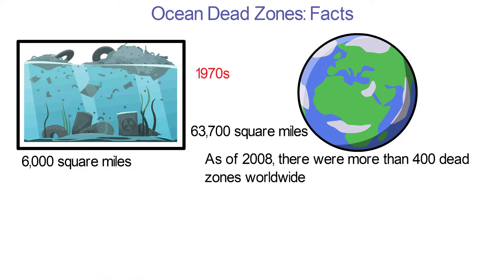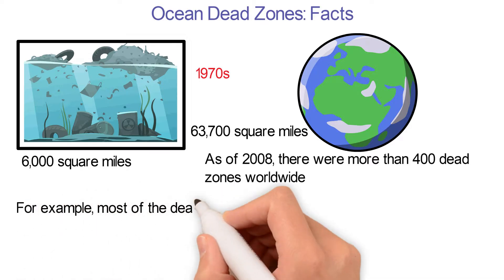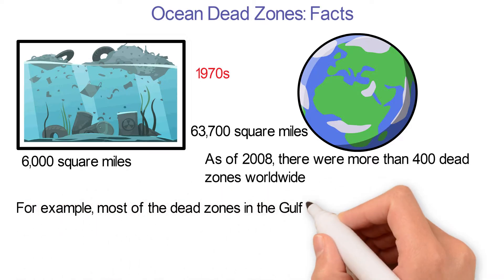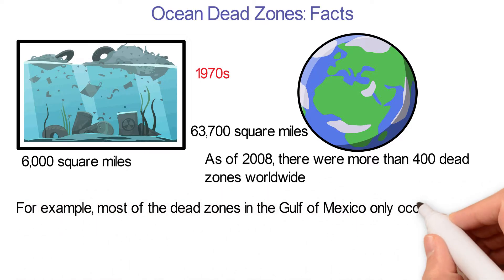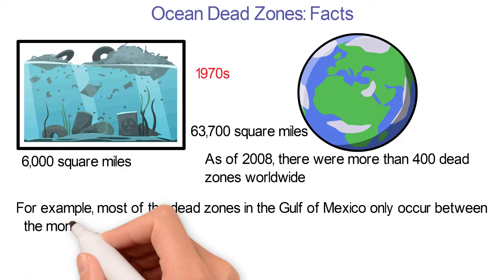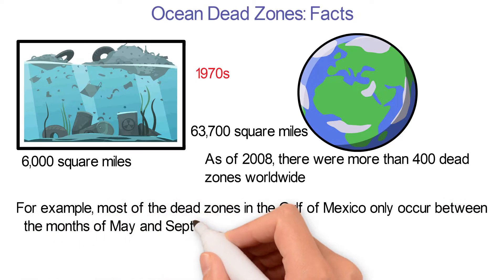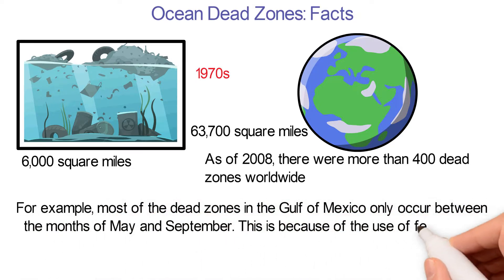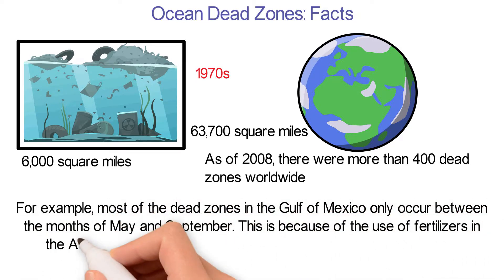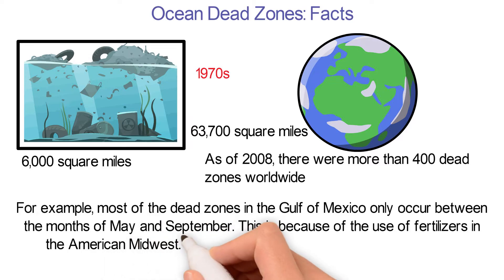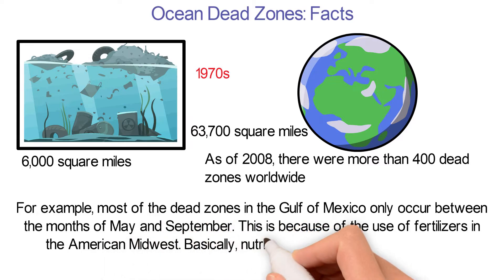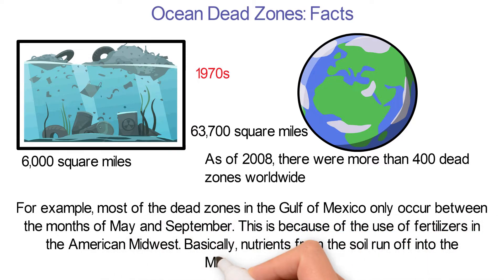Many of these dead zones only occur during a specific season of the year. For example, most of the dead zones in the Gulf of Mexico only occur between the months of May and September. This is because of the use of fertilizers in the American Midwest. Basically, nutrients from the soil run off into the Mississippi River.